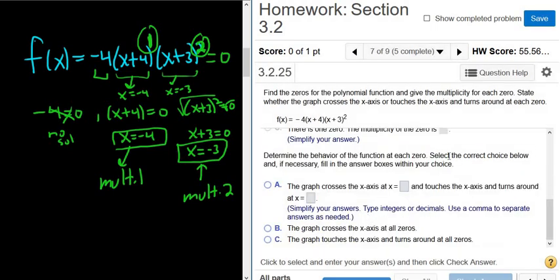So let's determine the behavior of the function at each zero. Okay, so whenever the multiplicity is odd, okay, it crosses the x-axis. Whenever it's even, it touches and turns around. So it touches and turns around.